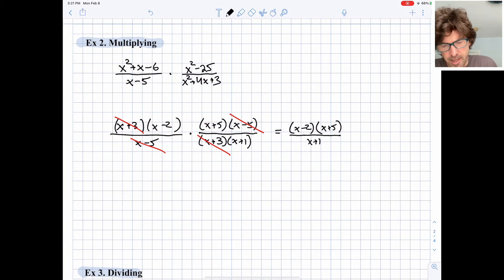x plus 1. I think if your teacher doesn't specify, you don't need to multiply out the numerator here. You don't need to do the FOIL process. I think it's easier to write it in factored form. But we do need to keep in mind that x can't be 5 and x can't be negative 3. So that would be our solution right there.